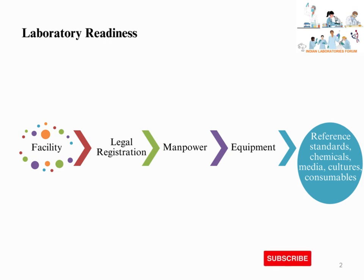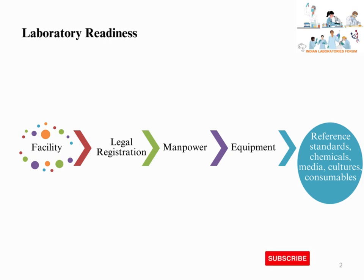Government laboratories are also included. Number 3: Competent Manpower. Laboratory management should hire competent manpower relevant to the scope of testing with relevant experience. Number 4: Suitable Equipment. Equipment should be suitable for performing the testing within the scope of the laboratory, and those equipment should be capable of achieving the required accuracy.